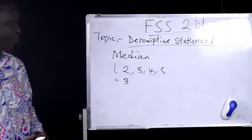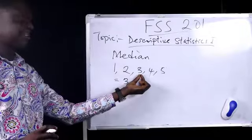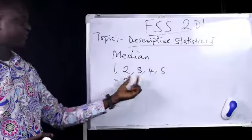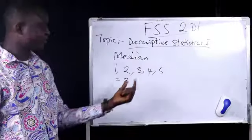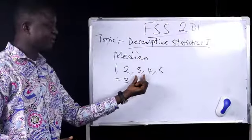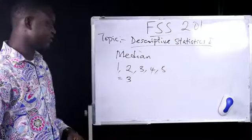But in the event where we have more than one number at the middle, it is expected of you to sum the two numbers and divide it by 2. So you get the average number and it will be the median of the distribution.